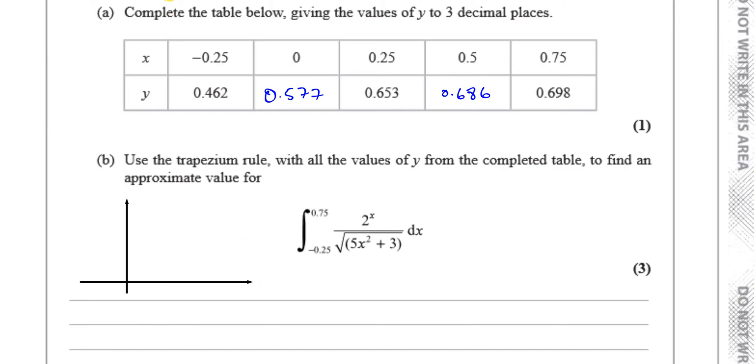We have minus 0.25, then 0, then 0.25, then 0.5, then 0.75. You can see that's 0.25 and then another 0.25 and another 0.25 and another 0.25. So the width of each of these, or the distance between each of the x values, is 0.25.